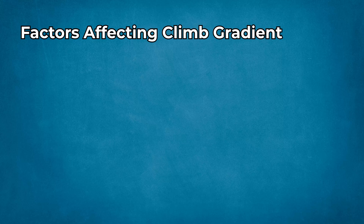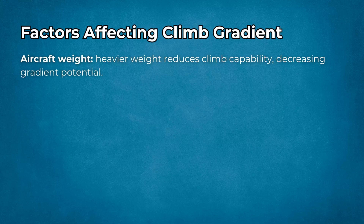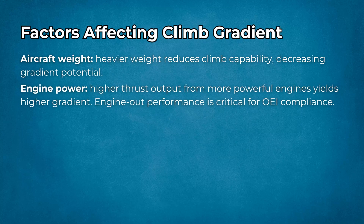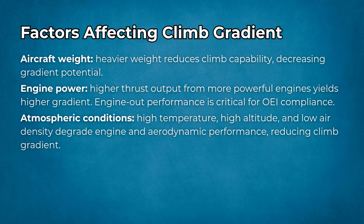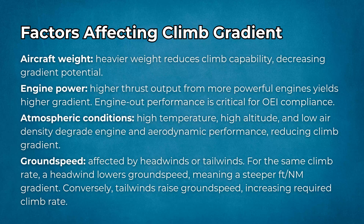Several factors influence climb gradient performance. Aircraft weight: heavier weight reduces climb capability, decreasing gradient potential. Engine power: higher thrust output yields higher gradient, and engine performance is critical for OEI compliance. Atmospheric conditions: high temperature, high altitude, and low air density degrade engine and aerodynamic performance, reducing climb gradient. Ground speed, affected by headwinds or tailwinds: for the same climb rate, a headwind lowers ground speed, meaning a steeper gradient. Conversely, tailwinds raise ground speed, increasing the required climb rate.